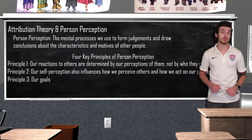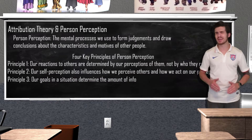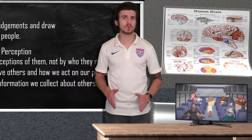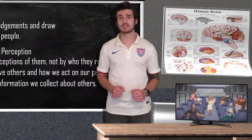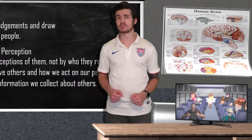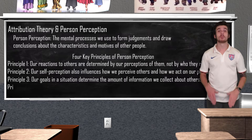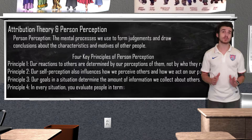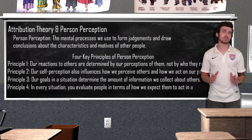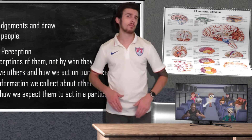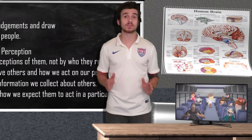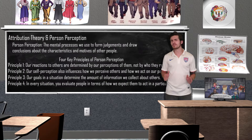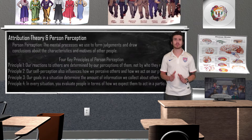Principle three states that our goals in a particular situation determine the amount and kinds of information that we collect about other people. Let's say we're on the bus and we're not feeling too social and just want to be left alone — we may look to sit next to someone who appears preoccupied. Principle four states that in every social situation, we evaluate people partly in terms of how we expect them to act within that particular context. You see an empty row and decide to sit there because it goes with the established societal norm — generally, people think it's a little weird if you sit next to them when there are empty rows on public transit.